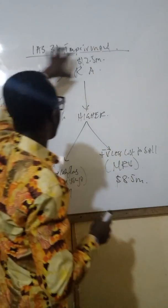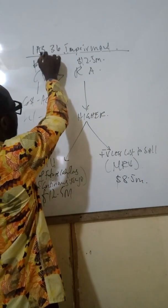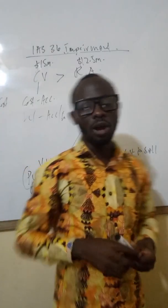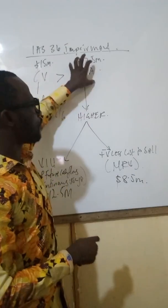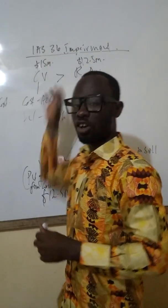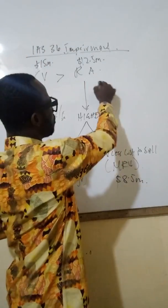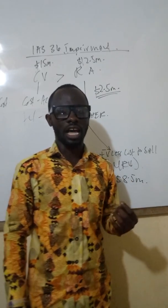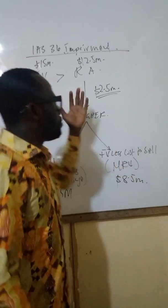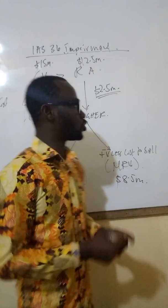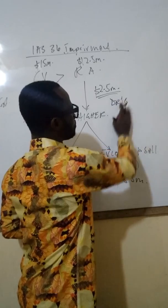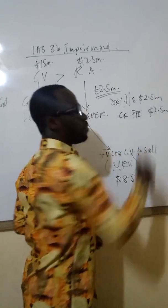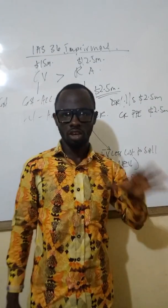Once we have the recoverable amount, we compare it to the carrying value of the asset. If the carrying value is $50 million and the recoverable amount is $12.5 million, the asset has suffered an impairment. The difference of $37.5 million is the impairment loss. Because it is a loss, we debit the income statement and credit the property, plant, and equipment account with the impairment loss amount.